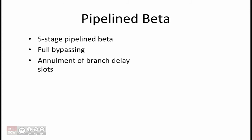For this problem, assume that you have a fully functioning 5-stage pipeline beta with full bypassing and annulment of branch delay slots as presented in lecture.